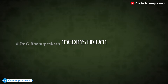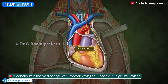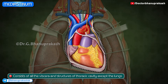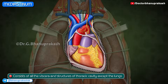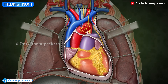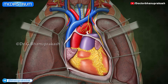In this topic we will be discussing the boundaries, divisions and contents of the mediastinum. The mediastinum is the median septum between the two pleural cavities. It consists of all the viscera and structures of the thoracic cavity except the lungs. The mediastinum occupies the central compartment of the thoracic cavity; strictly speaking, it is a broad central partition which separates the two laterally placed pleural cavities. It is covered on either side by mediastinal pleura.